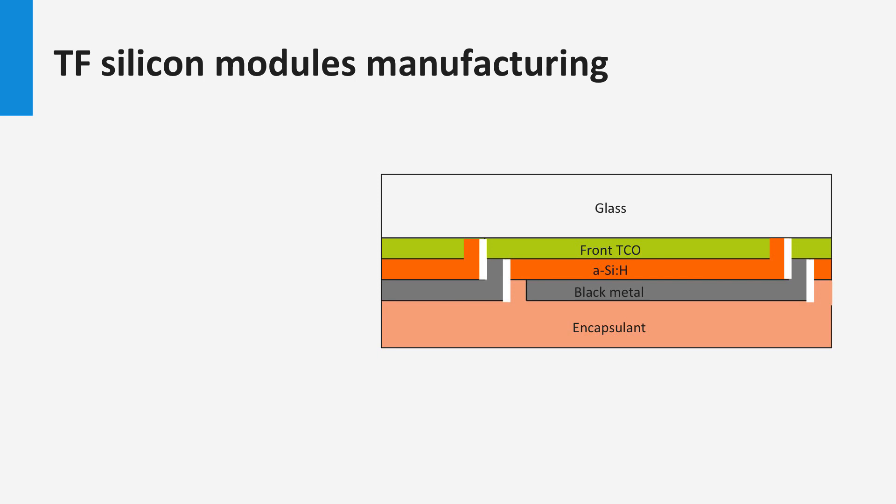The configuration of solar modules of thin-film PV technologies are different from those based on crystalline silicon-based wafers. Here we will show the concept of how the solar cells in a thin-film PV technology are processed and interconnected. We will show it here for a thin-film silicon PV technology. In the next blocks we will discuss other thin-film technologies like CIGS and cadmium telluride. Similar interconnection schemes are being used for these technologies.